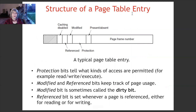The structure of a page table entry includes several parts. Protection bits tell what kinds of access are permitted — for example, read, write, etc. Modified and reference bits keep track of page usage. The modified bit is sometimes called the dirty bit — it indicates whether the page has been updated, i.e., whether any information has been written into that page. If written, the content is changed and the dirty bit becomes 1. The reference bit is set whenever a page is referenced, either for reading or for writing.